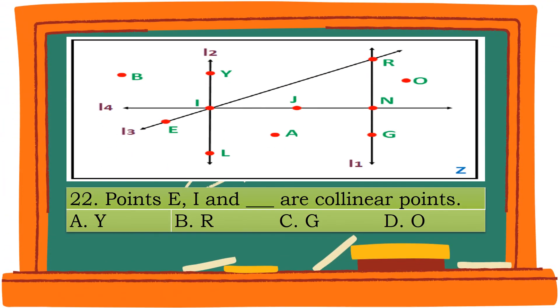Question 22. Points E, I, and blank are collinear points. A. Y. B. R. C. G. D. O. The correct answer is B. R.